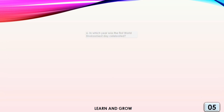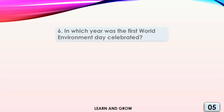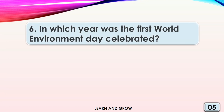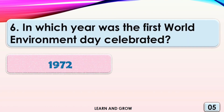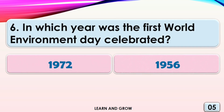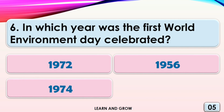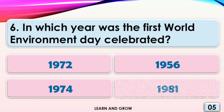In which year was the first World Environment Day celebrated? Option A, 1972; option B, 1956; option C, 1974; or option D, 1981.